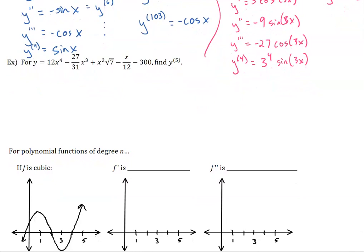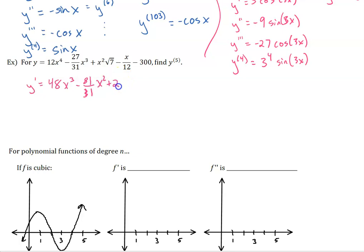For this problem we're asked for the fifth derivative and we are looking for a pattern. If I look at these terms, this is a polynomial. I do have fractions and radicals but the x powers are 4, 3, 2, 1, 0. Looking at the first derivative, we have 48x cubed, then 81 over 31 x squared, then plus 2x times root 7, then minus 1/12, and then the constant drops off to 0. The linear term is now a constant so it will drop off on the next derivative.